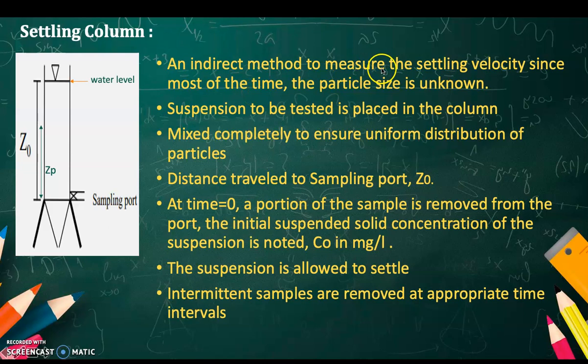Most of the time we don't know the settling velocity of certain particles. A suspension to be tested is placed in this column, mixed completely to ensure uniform distribution of particles. We have the sampling port here, and z_0 is the distance traveled to the sampling port.